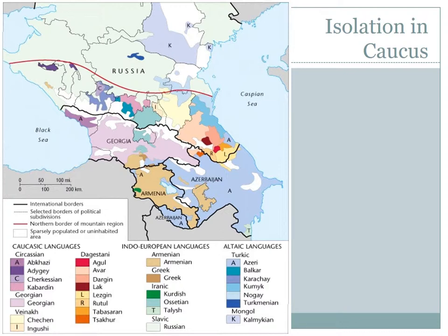Rugged, hostile, or isolated environments can often protect linguistic groups that might otherwise be eclipsed by more dominant languages. In short, isolation can serve to diverge languages from one another, but it can also protect those languages from being overcome by more dominant global languages.